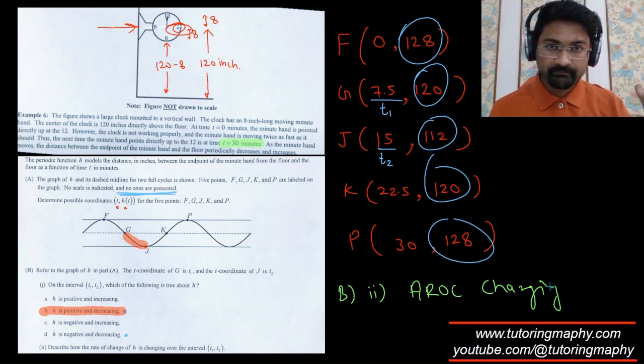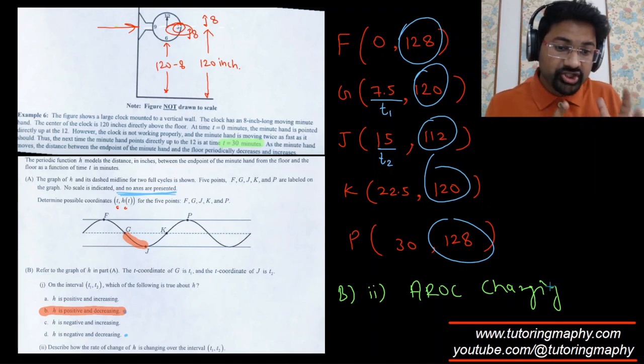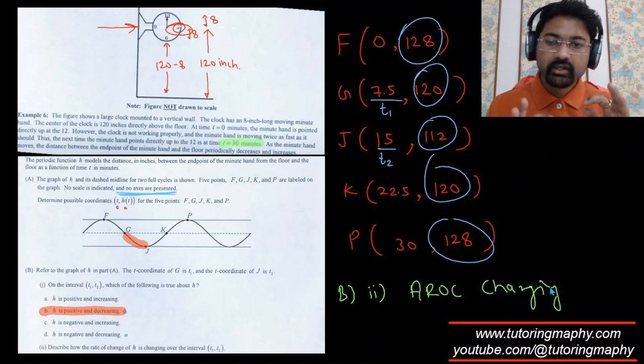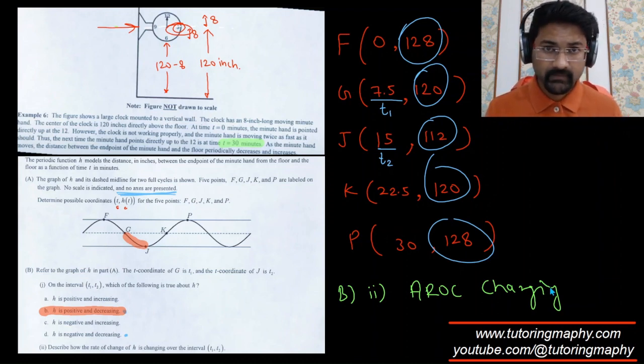If the average rate of change is increasing, then it is concave up, or vice versa. If it is concave up, then the average rate of change is increasing. And if it is concave down, then the average rate of change is decreasing.